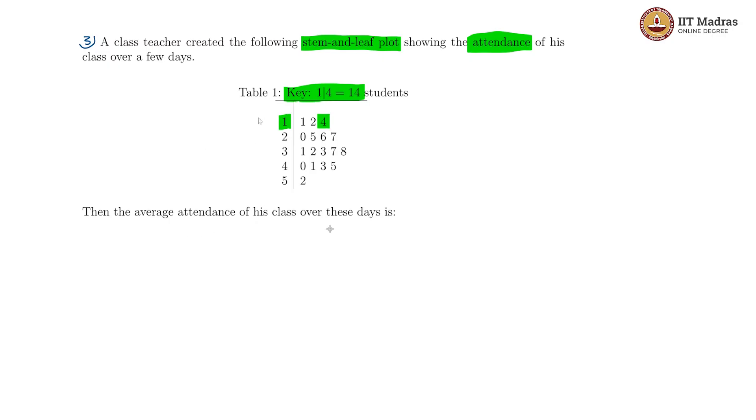They are asking us the average attendance. That would imply we have to do the sum of all the attendances, and let us look at the ones first. So we have 11 and a 12 and a 14. Thus we have 11 plus 12 plus 14, then plus further on moving on.